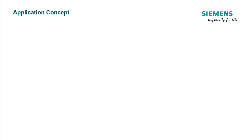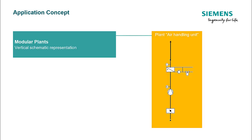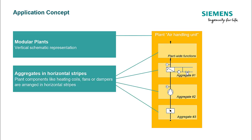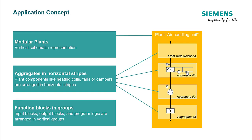Now we can go into more detail to find out how these components are depicted in a plant. A plant is arranged so that the schematic representation is vertical, then divided into horizontal stripes. Each stripe depicts an aggregate such as heating coils, fans, or air dampers, and includes input blocks, output blocks, and program logic for that plant component. To make the overview simpler, the function blocks are arranged in vertical groups.